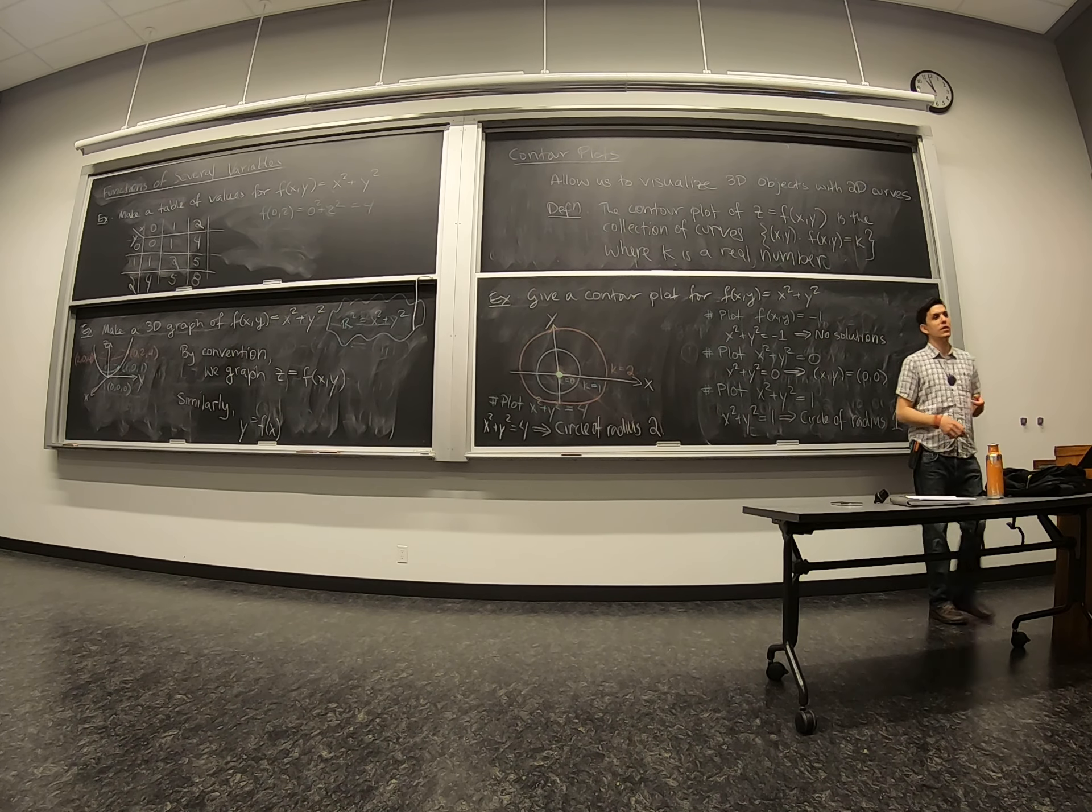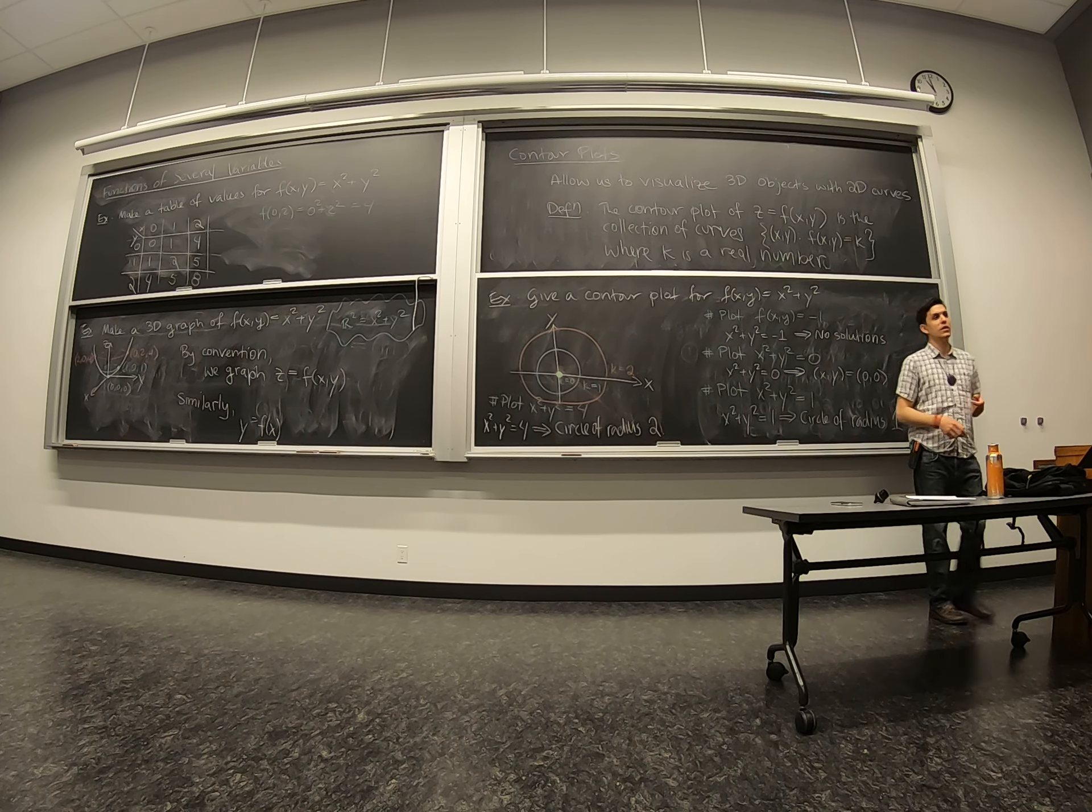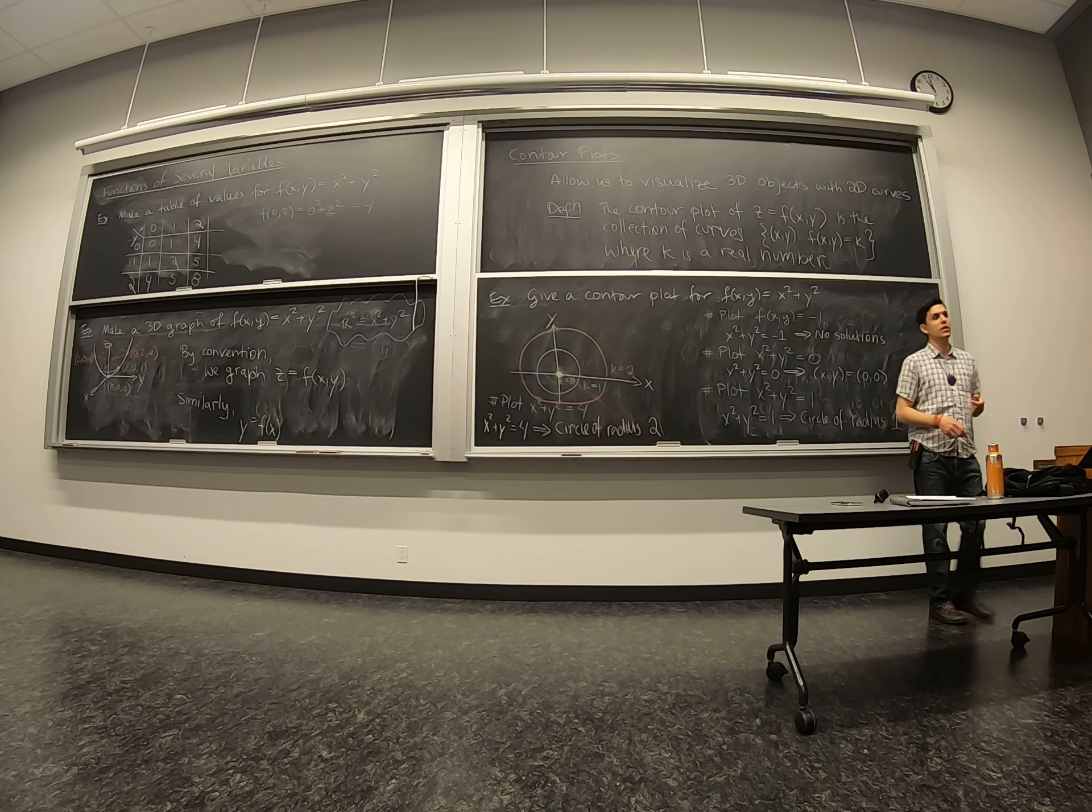What this is telling us is that when we cut the 3D graph of this at different heights, all of the curves we obtain are circles. You get a circle of radius zero, circle of radius one, circle of radius two. And once we've spotted this pattern, we can imagine what happens for any value of k.